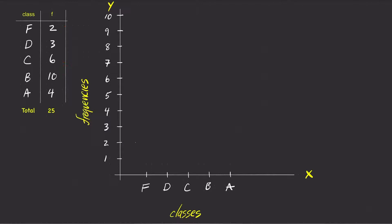For the first class F, the frequency is two. So draw a rectangle with a height of two on top of F. Notice how the tick F is in the middle of each side of the rectangle.